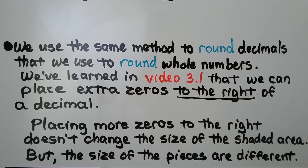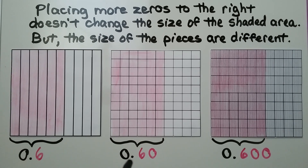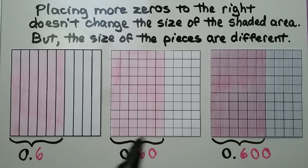We used the same method to round decimals that we used to round whole numbers. We've learned in video 3.1 that we can place extra zeros to the right of a decimal. Placing more zeros to the right doesn't change the size of the shaded area, but the size of the pieces are different. For 6 tenths, 60 hundredths, or 600 thousandths, the same area is shaded. The size of the pieces are different, that's all. They each have a six in the tenths place. All of these decimals represent the same amount.